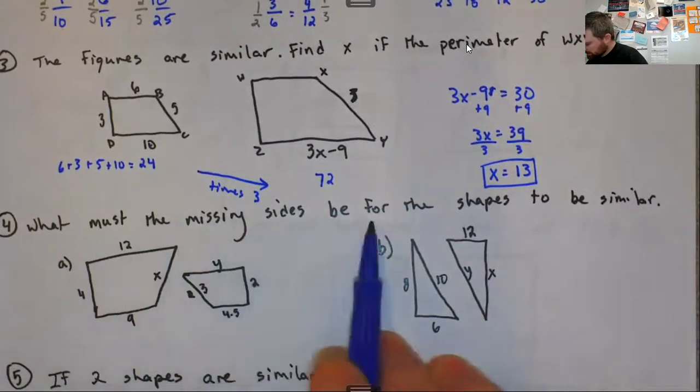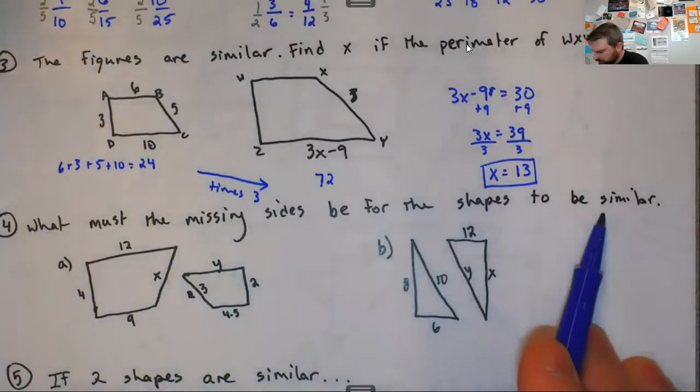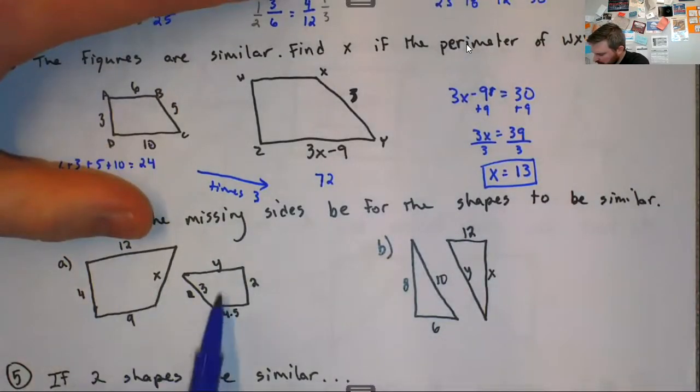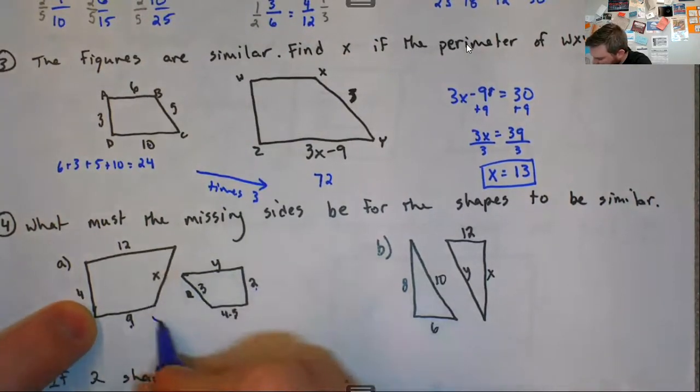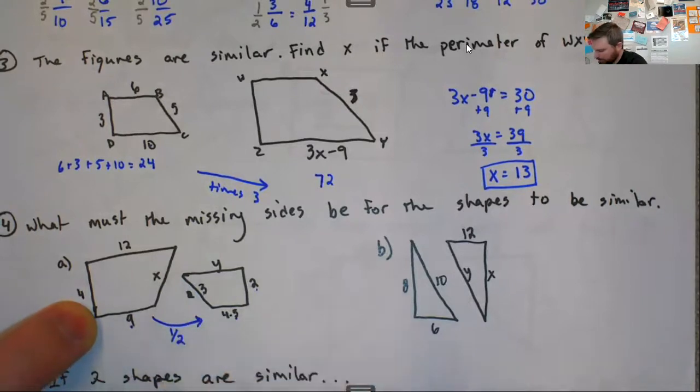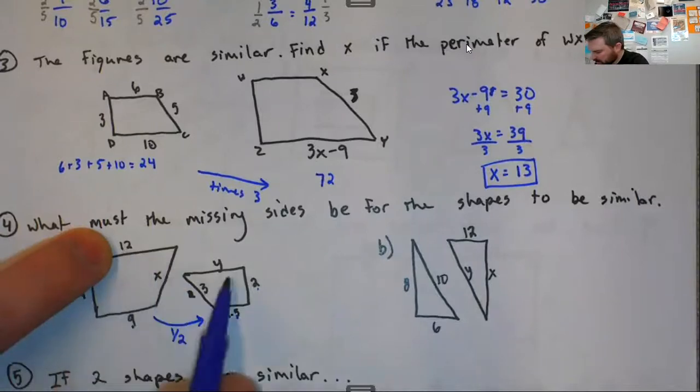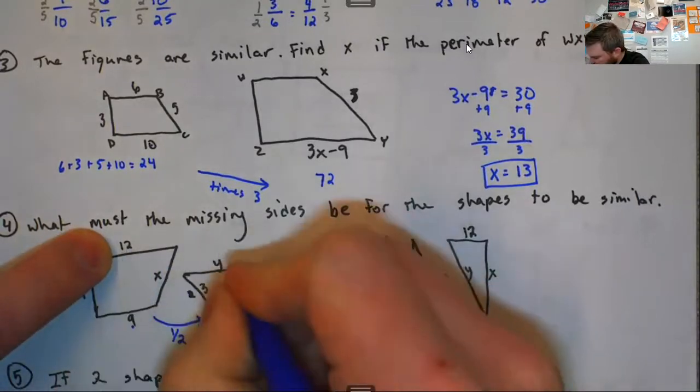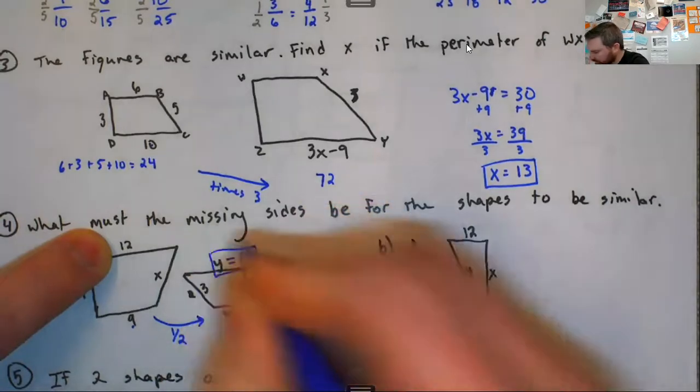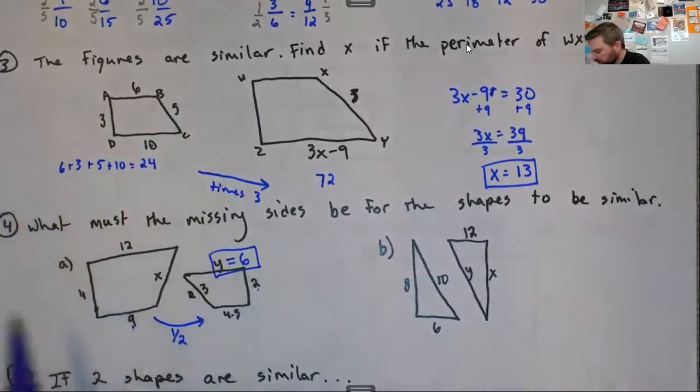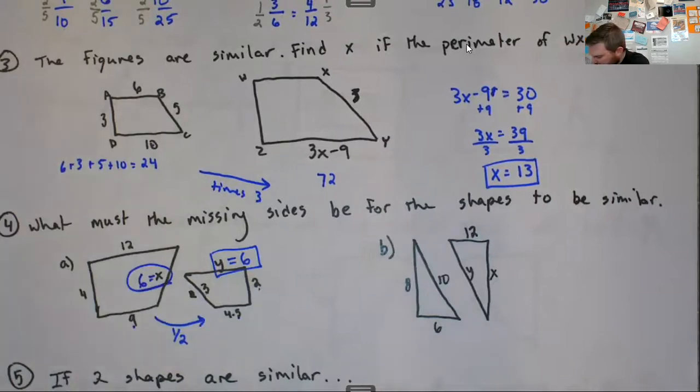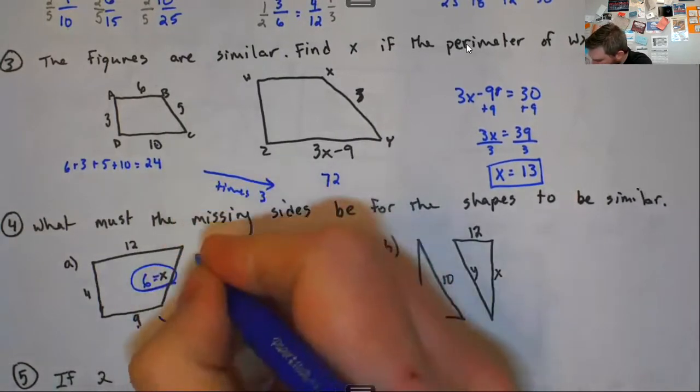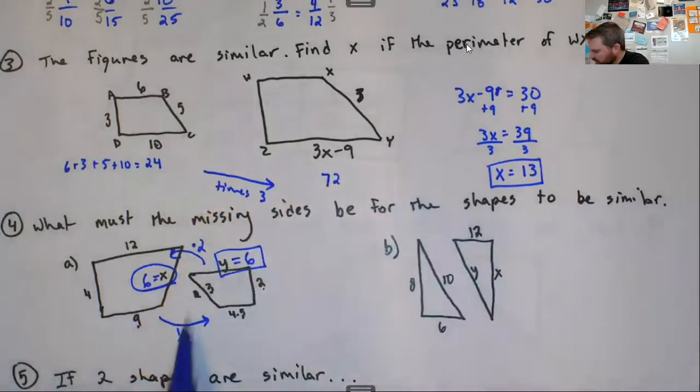Your perimeter uses the same scale factor. What must the missing sides be for the shapes to be similar? I got 12, 4, 9, x, y, 2, 3, 4 and a half. So it looks like going from this side to this side or nine to four and a half, you're dividing by two. So to go from here to here, 12 divided by two would be six. That would be y. And to go the opposite direction, you're going to multiply by two. So three times two is six. So that would be x.